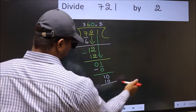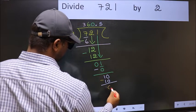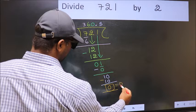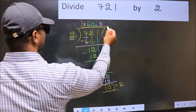Now, you subtract. 10 minus 10, 0. This is our remainder. And this is our quotient.